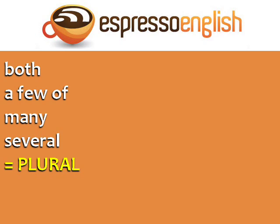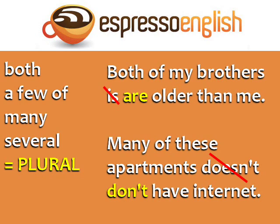Both, a few of, many, and several are all plural. For example, 'both of my brothers are older than me' and 'many of these apartments don't have internet.'